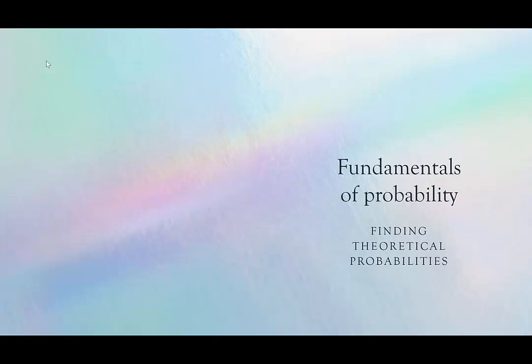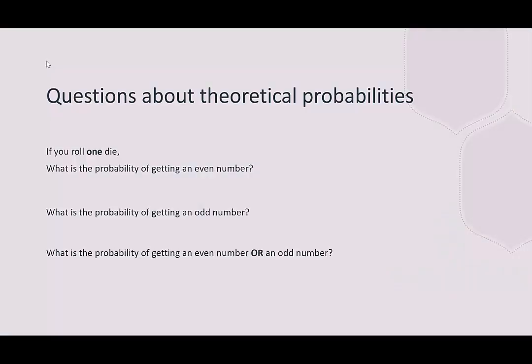Hello and welcome to HelpYourMath.com. In this video, we are going to look at finding theoretical probabilities when we roll one or two dice and we observe either the number on top of one die or the sum of the two dice.